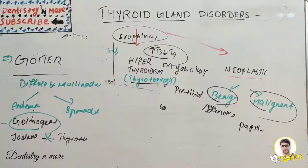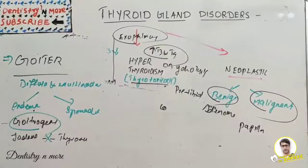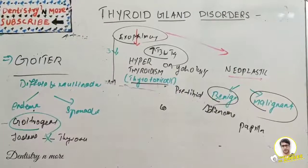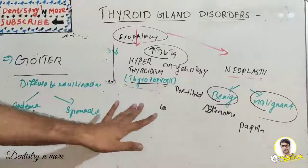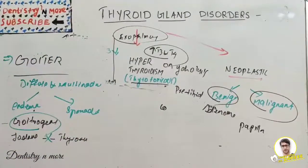So that was all about thyroid disorders. We covered hypothyroid conditions — myxedema, cretinism, thyroiditis — hyperthyroid conditions — Graves' disease, thyrotoxicosis, thyroid storm — goiter — endemic and sporadic — and neoplasms — adenomas and various carcinomas (papillary, medullary, etc.). This is a very commonly asked topic in physiology, with many possible short notes, so never miss this chapter for your exam. I'll come back with a new topic in Dentistry and More. Thank you.